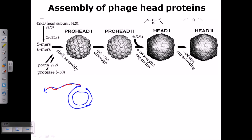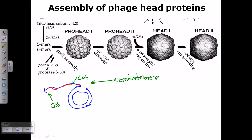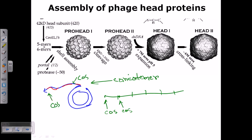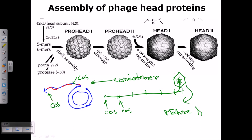As rolling circle replication continues, more copies of the phage genome are made. At both terminals of each copy, an important site called the cos site forms. This produces a long stretch of DNA where the same genome is repeated — called a concatamer. Cos sites are present at both terminals of the concatamer. Packaging then begins: the head takes the concatamer and cleaves sections out from cos site to cos site, packaging them into the phage head to produce mature lambda phage.